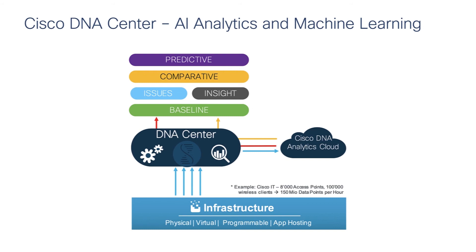Artificial intelligence is a system for solving complex problems and taking actions without human intervention. Machine learning is the ability to statistically learn from data without explicit programming. Cisco DNA Center collects data from network devices like wireless LAN controllers, access points, and switches.